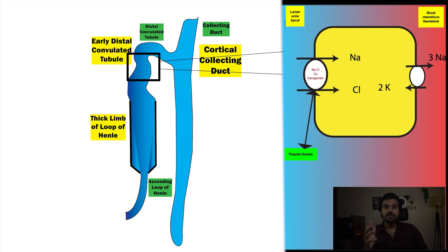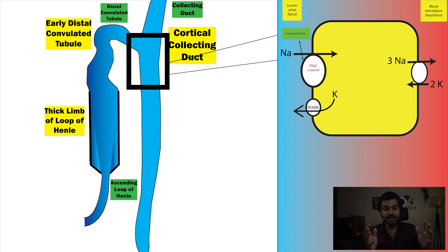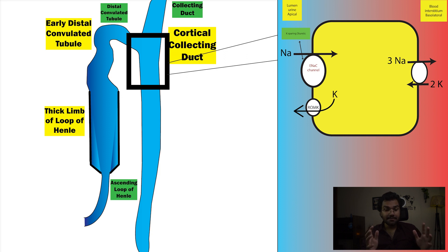In the distal convoluted tubule, the NaCl cotransporter moves sodium and chloride together from the lumen towards the blood, and thiazide diuretic inhibits this channel. In the cortical collecting duct, ENaC is the channel that moves sodium into the blood from the lumen, and potassium-sparing diuretics like amiloride inhibit this channel. We also have a channel named ROMK which excretes potassium towards the urine from the blood side.